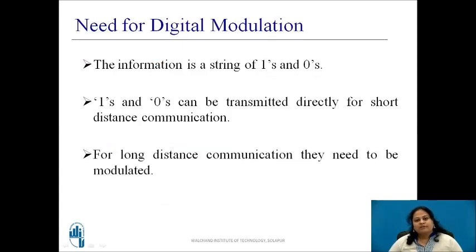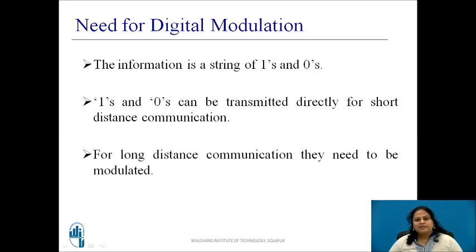But what is the need for digital modulation techniques? In digital communication, the information or modulating signal is in the form of 1s and 0s. For wired channels or short distance communication, they can be transmitted directly using different line coding techniques, that is by using a baseband data transmission system. But by using this method, they cannot be transmitted over longer distances. Thus, to transmit this data through a wireless medium or for long distance communication, a passband data transmission system is used.